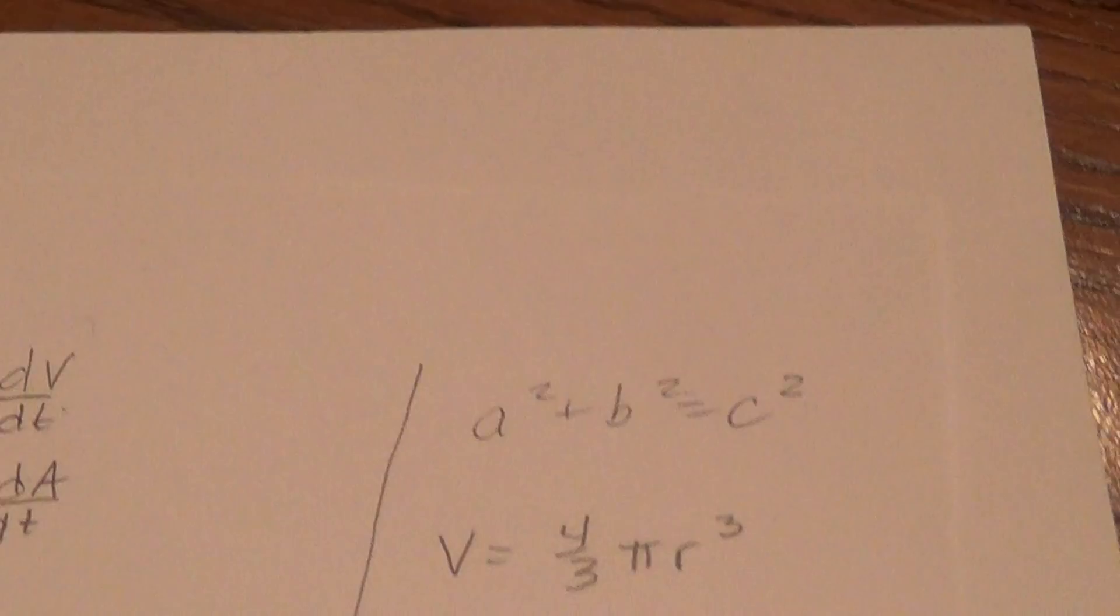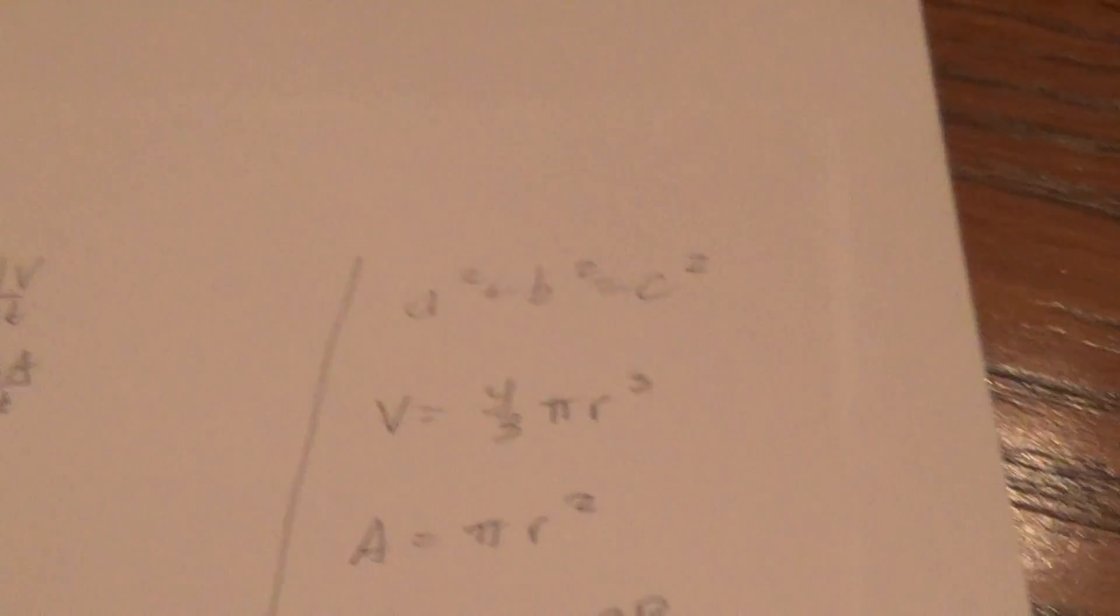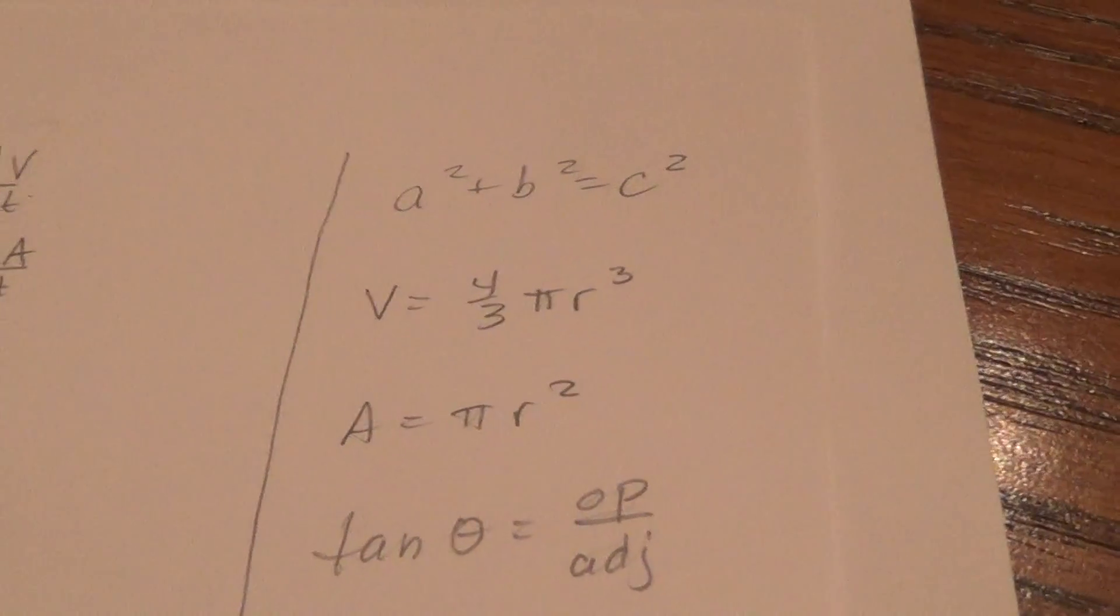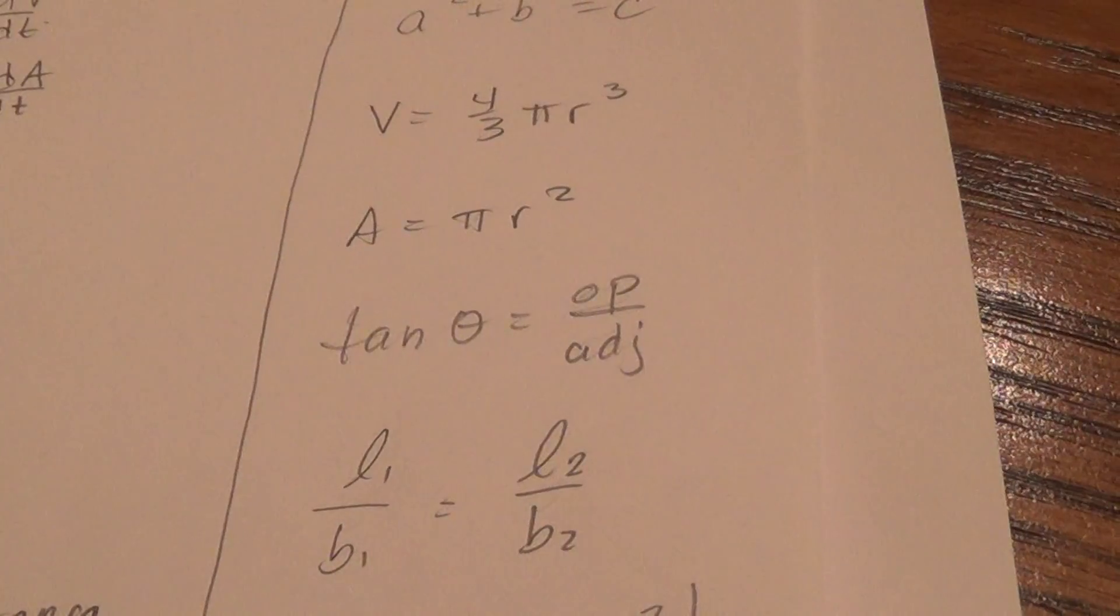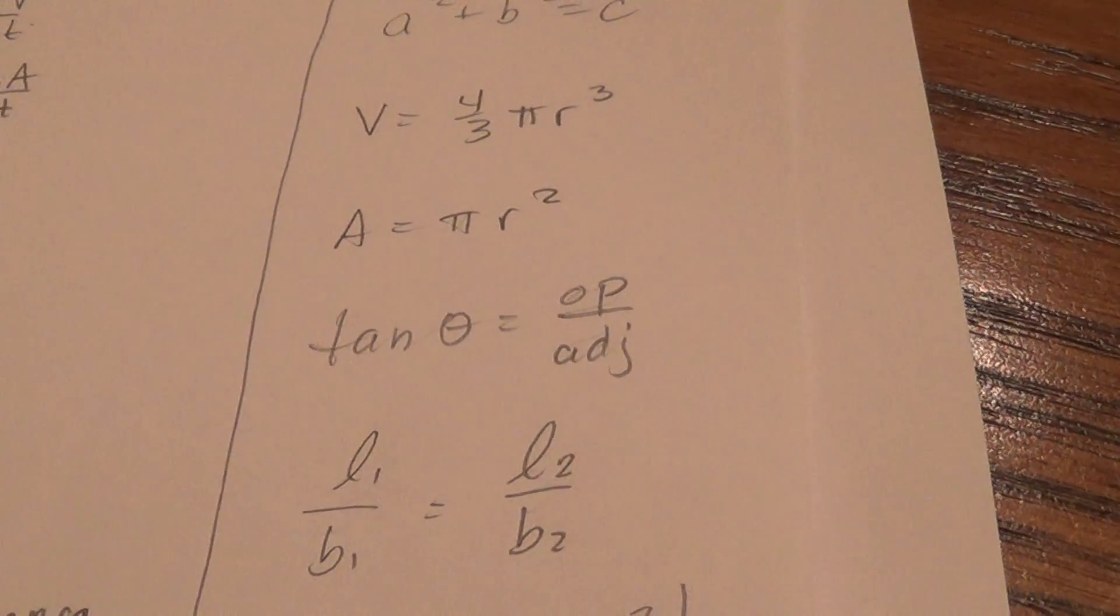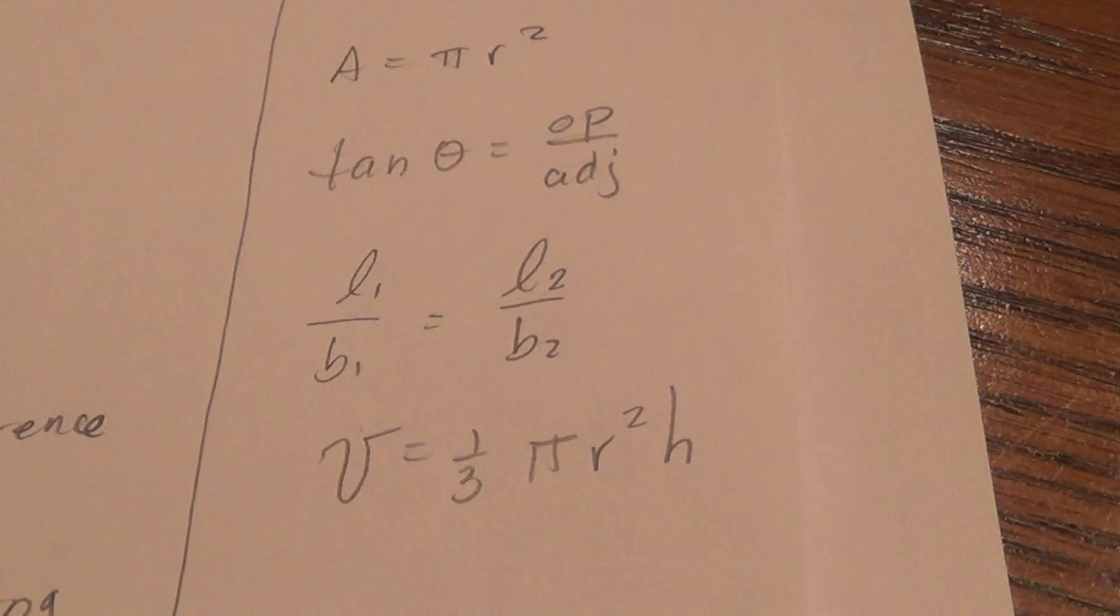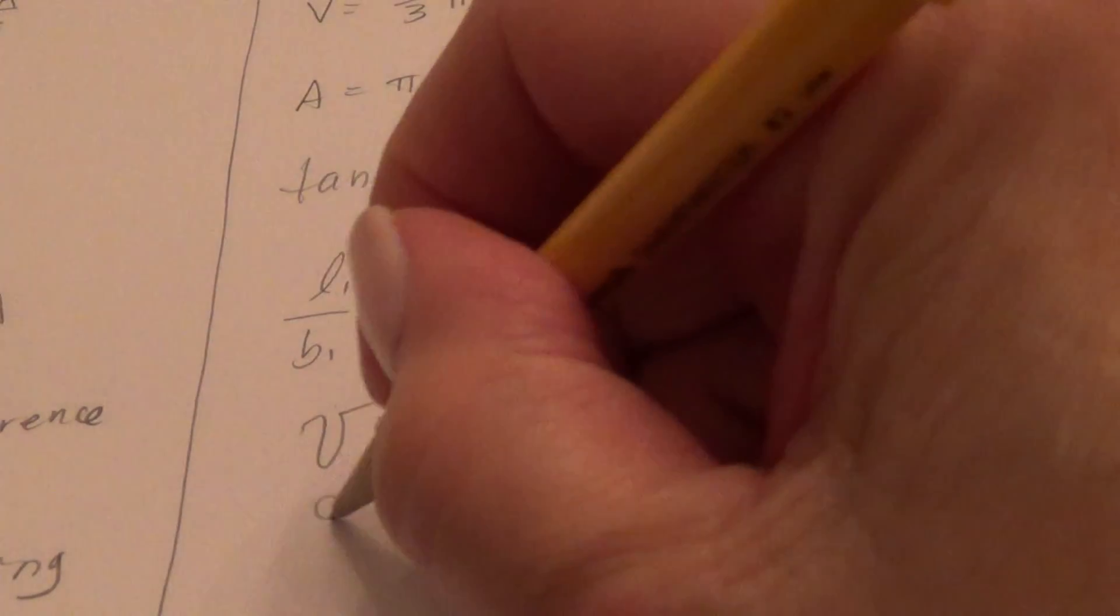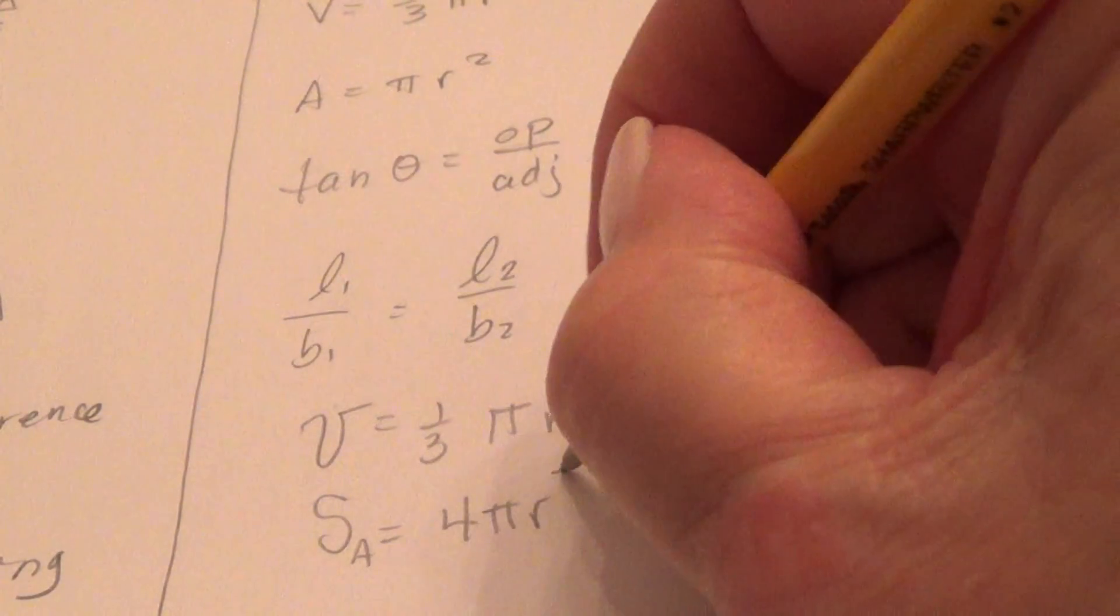Here's some of the main ones that you run into. Pythagorean theorem, volume of a sphere, area of a circle, tangent of an angle, and proportions on a triangle. This side is that, so I said leg 1 is to base 1, as leg 2 is to base 2. So that's going to be true if they're similar triangles. And volume of a cone, 1/3 pi r squared h. I've also seen surface area of a sphere. And that is 4 pi r squared.